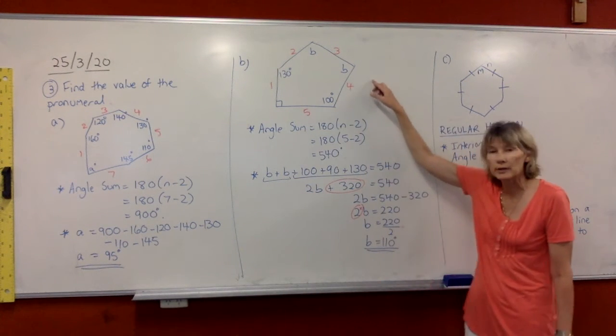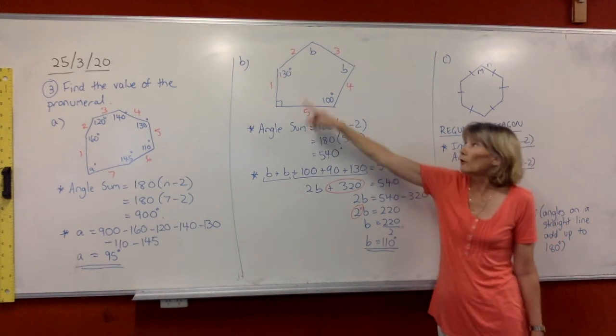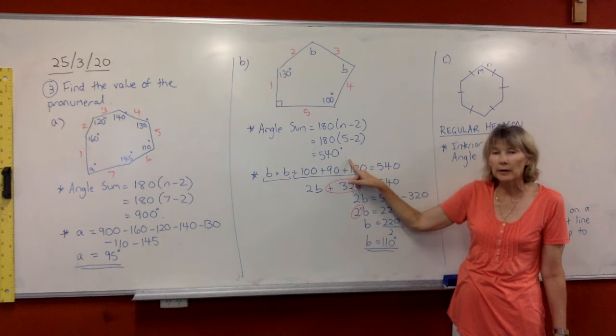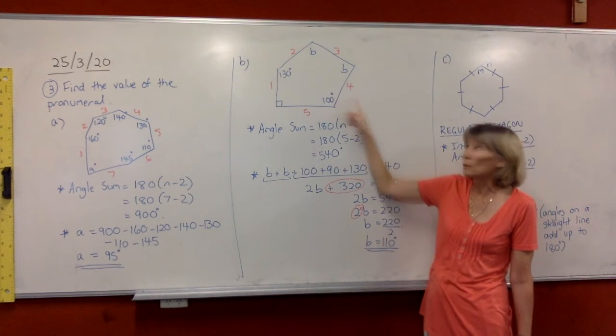In this next shape, we're going to do the same thing. I'm going to use this angle sum formula with our five sides. Put the n equals 5 in, work it out on your calculator and you get 540 degrees, which is to be shared by all these angles.